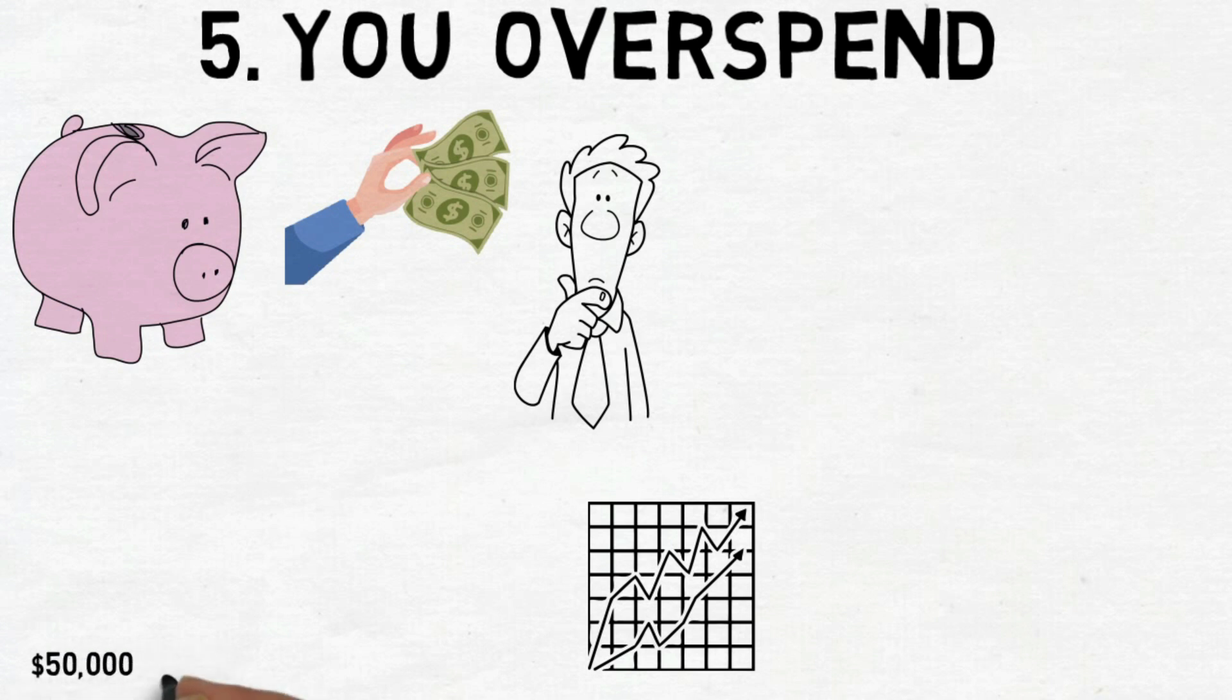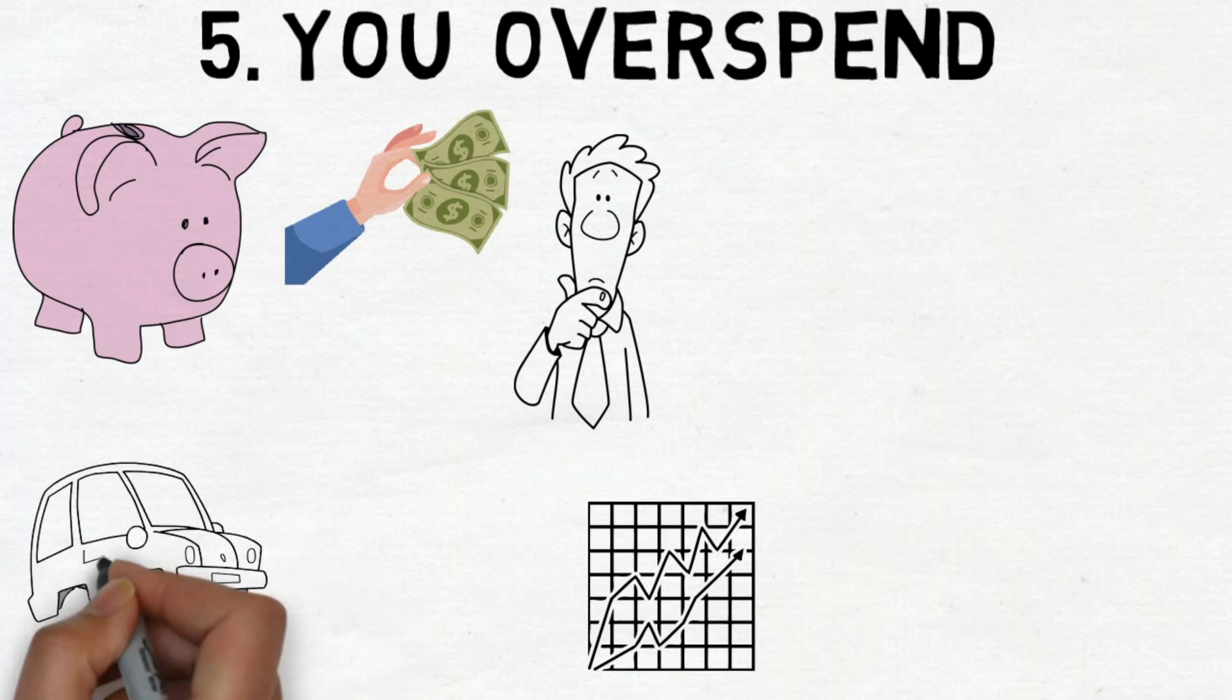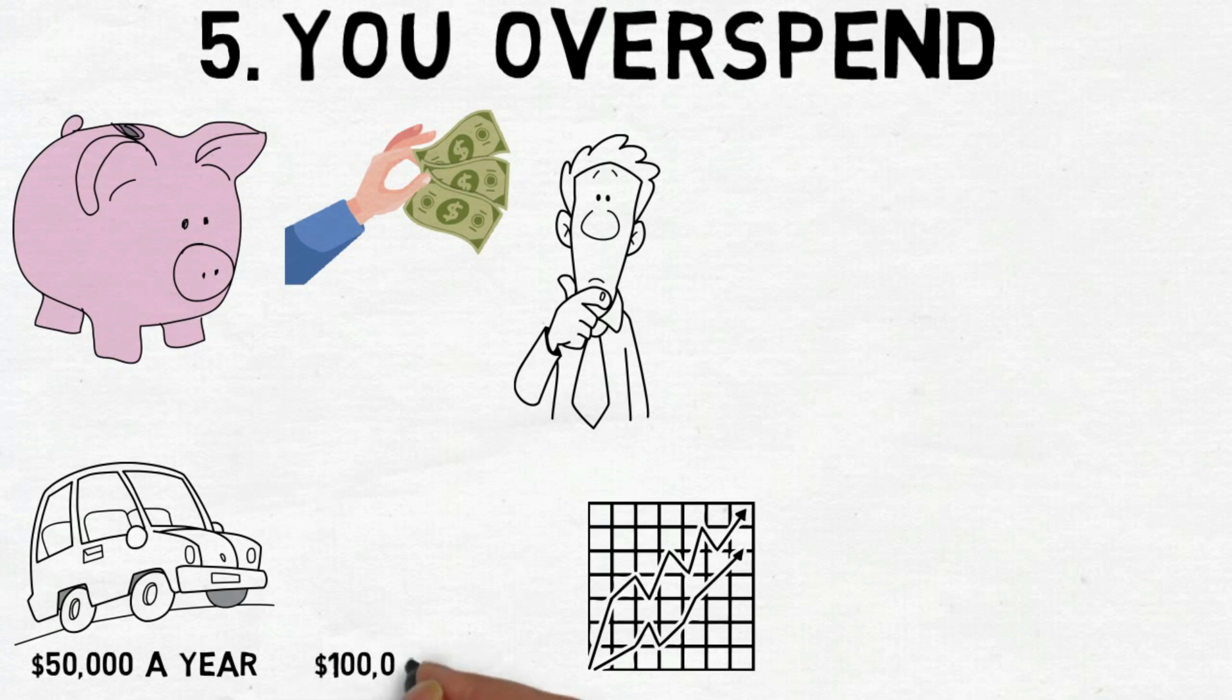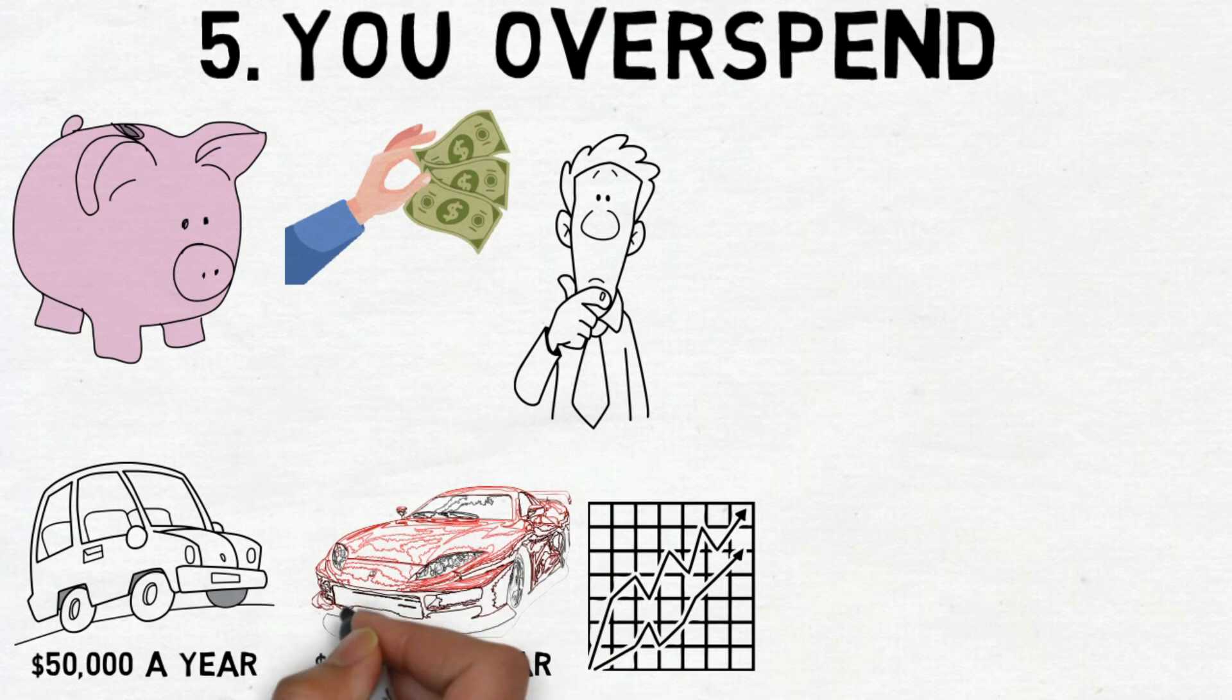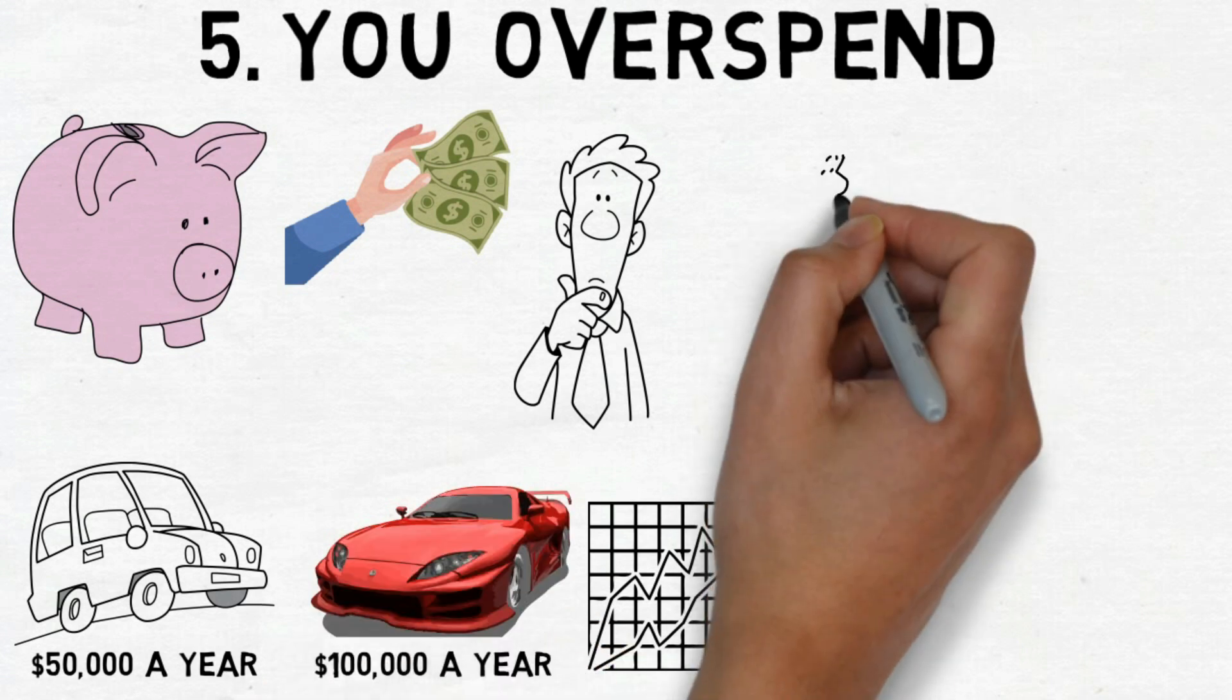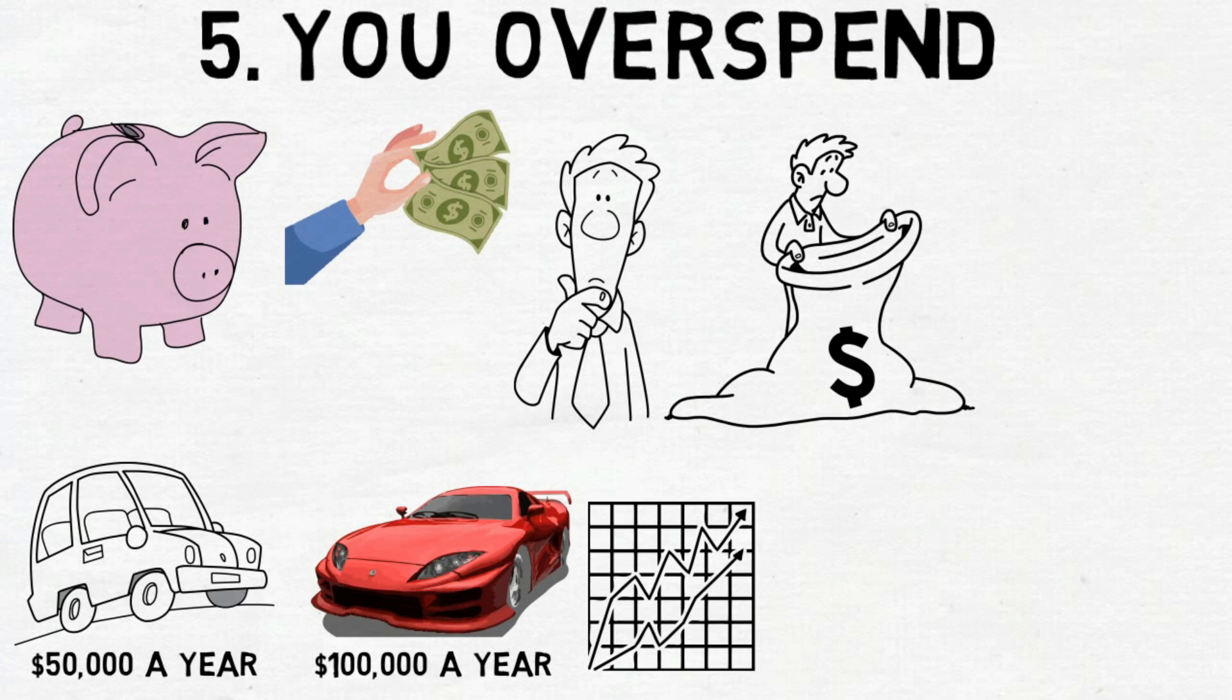For example, when you earn $50,000 a year, a regular car is okay. But if you suddenly earn twice that amount, you might want a fancy car, and that can make it hard to save. This occurs because of not being good at controlling your finances.